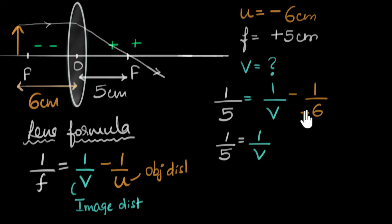So, we get one over v. This negative times negative becomes positive. We get plus one over six.